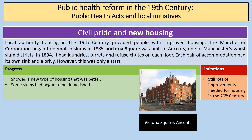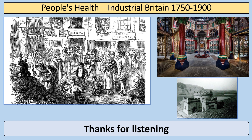Local authority housing in the 19th century provided people with better housing. The Manchester Corporation began to demolish slums in 1885. Victoria Square was built in Ancoats — one of Manchester's worst slum districts — in 1894, with laundries, turrets and refuse chutes on each floor, and each pair of accommodation having its own sink and privy. This showed that a new type of housing could be better, and some of the old slums from the Industrial Revolution were beginning to be demolished. However, as we'll see in the 20th century, there was still quite a long way to go on housing, with many changes still needed after 1900.